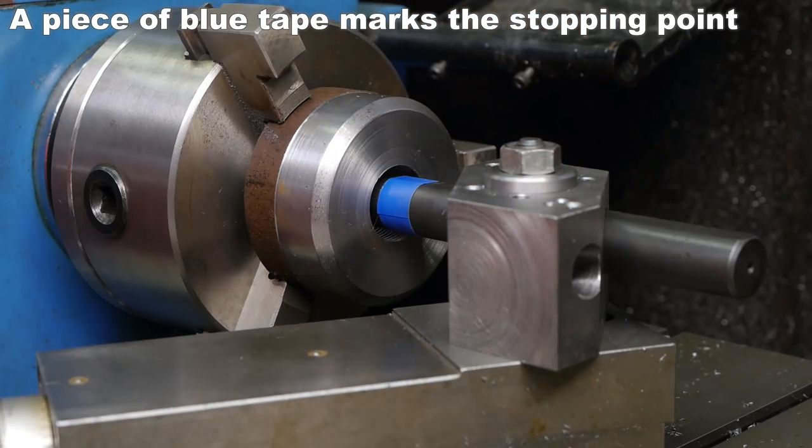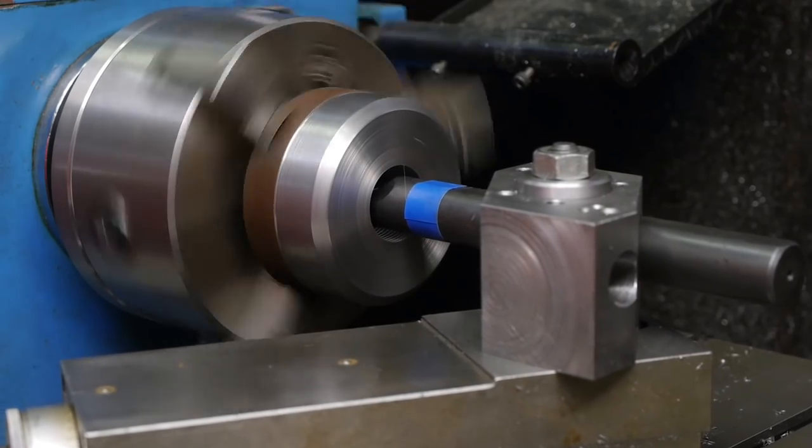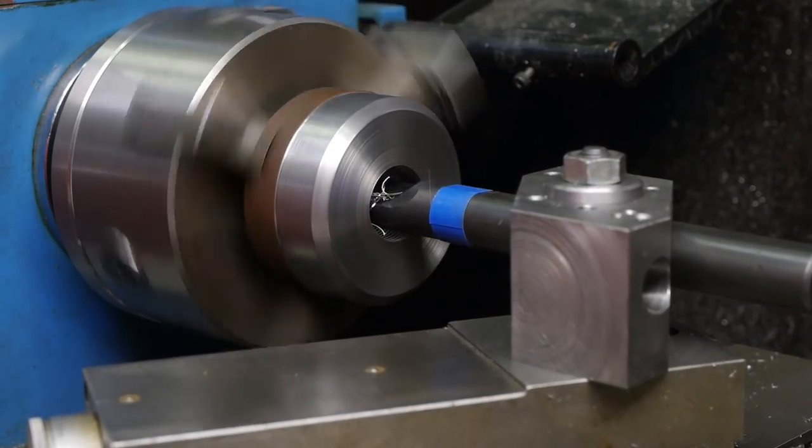I'm reversing the motor and backing out the tool again. The lathe doesn't have a threading dial so I'll have to keep the half nuts engaged for the whole threading operation.